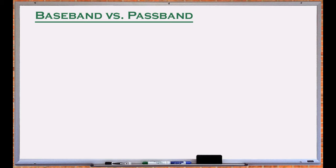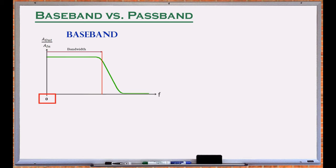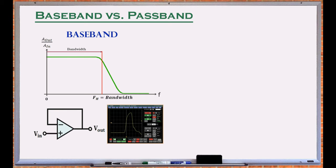Baseband and passband terminologies describe the lower frequency boundary for a given bandwidth. In a baseband system the lower boundary is 0 Hz or DC, and the higher boundary is referred to as the bandwidth of the system. Therefore, signals with frequencies less than the bandwidth pass through the system without a significant amount of loss. Operational amplifiers and oscilloscopes are examples of systems for which a baseband bandwidth specification is more meaningful.